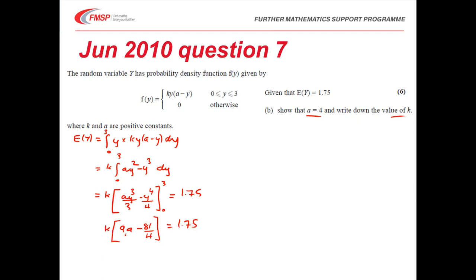There's lots of ways of tidying this up, but substituting for k now would be a good idea. k was equal to 2 over 9a minus 2, so we substitute that in now. We're going to get 2 lots of 9a minus 81 on 4 must equal 1.75 times by 9a minus 2.